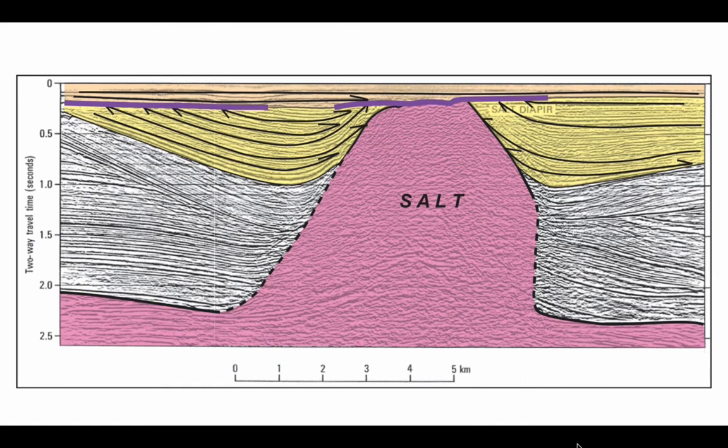If you look at the internal architecture of the reflections within the yellow package, there are local onlaps and so forth suggesting that it is synchronic with respect to the salt movement. These are complicated lap relationships that imply the presence of halokinetic sequences, and there's onlap onto the salt and tilting on that right hand side.